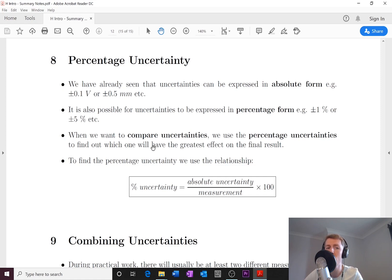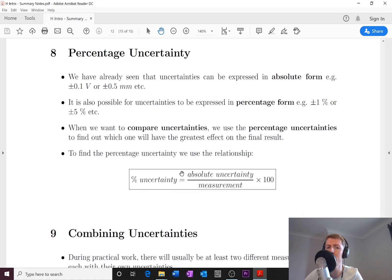So to find the percentage uncertainty we use this relationship here. Percentage uncertainty is equal to the absolute uncertainty divided by the measurement times 100. Just to give you an example of this...